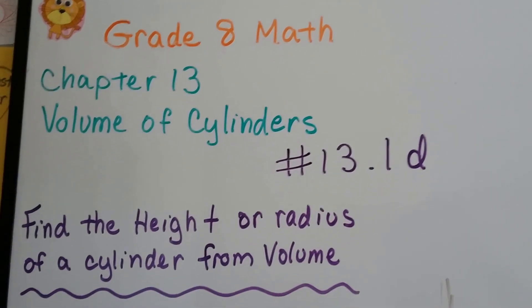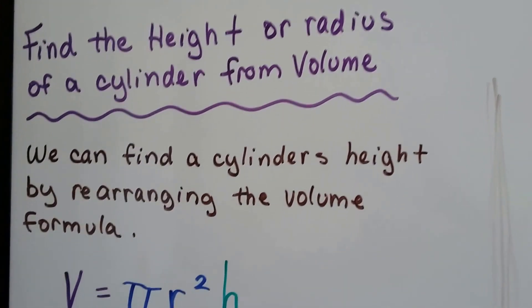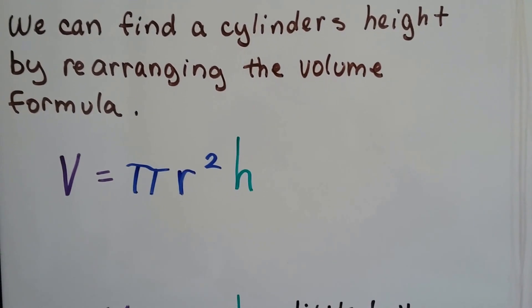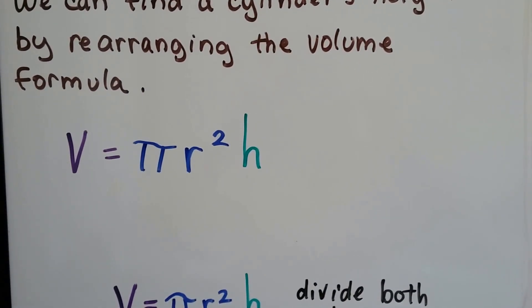Grade 8 math number 13.1d. We're going to find the height and the radius of a cylinder from its volume. We can find a cylinder's height by rearranging the volume formula, which is V equals π r squared h.